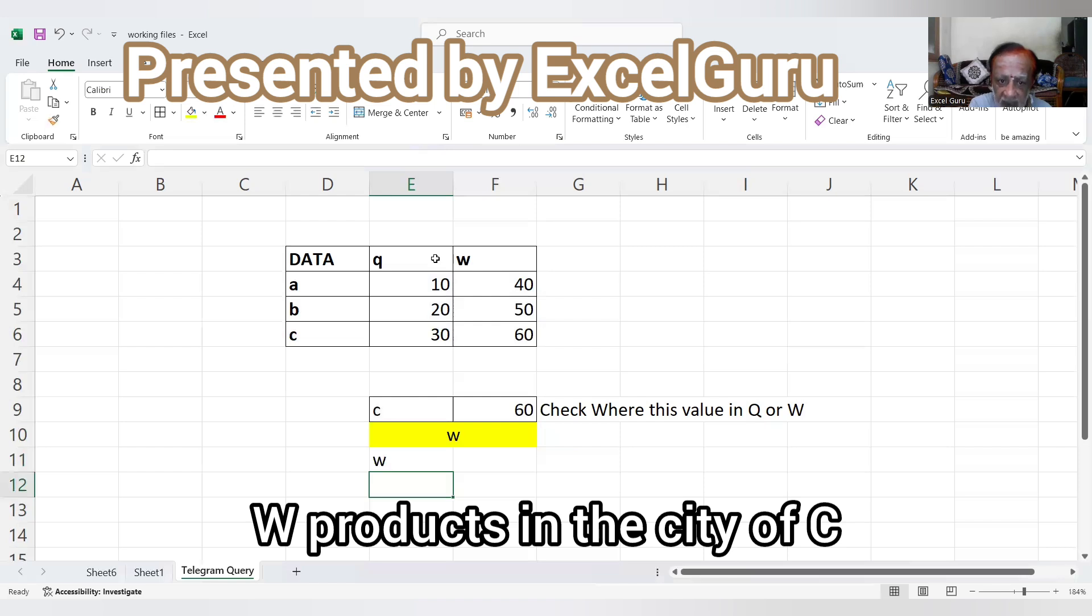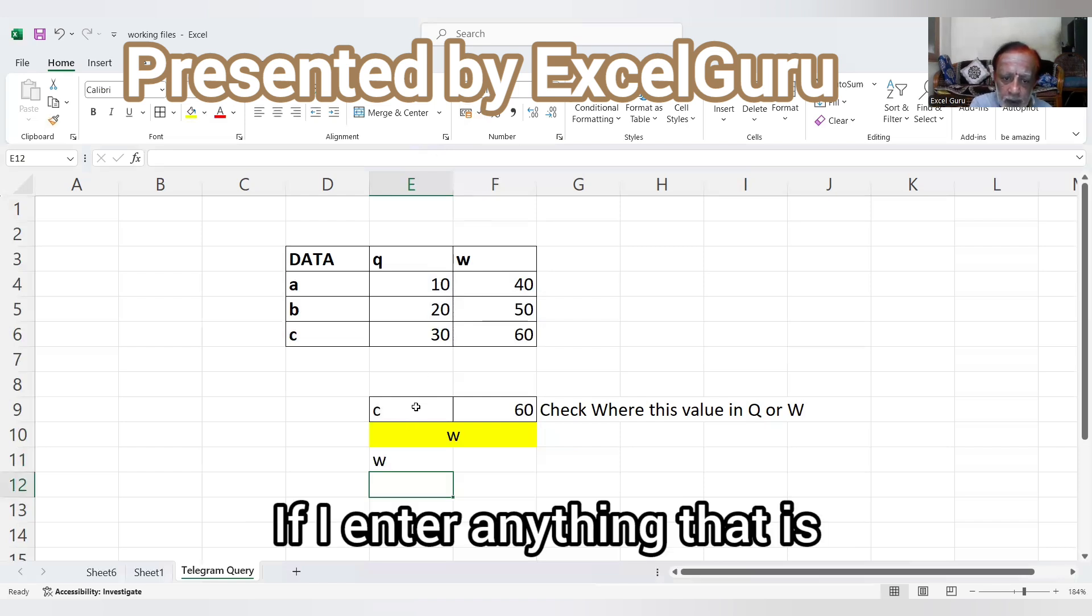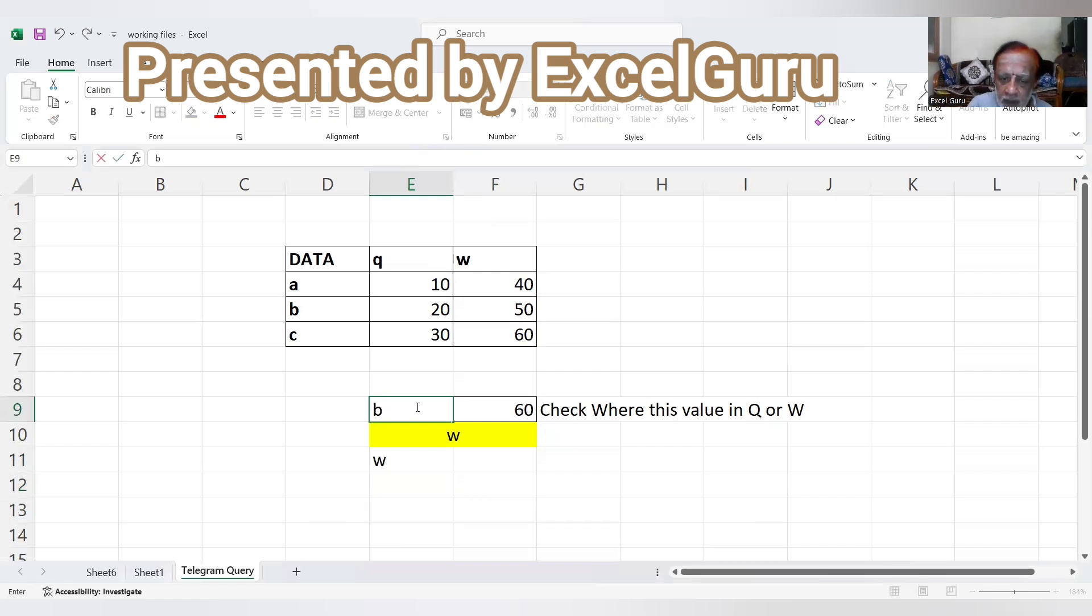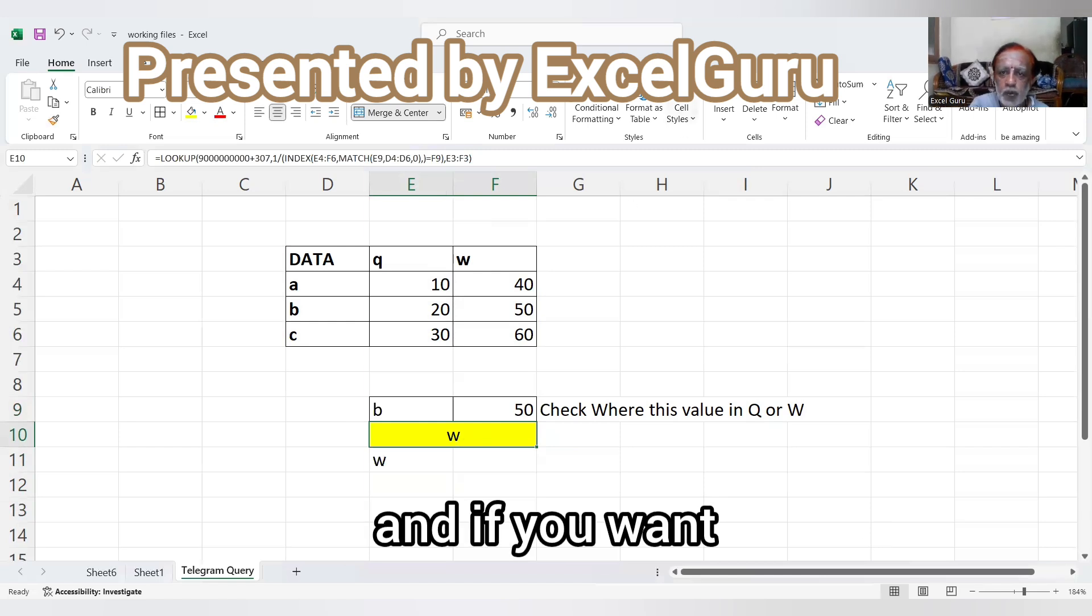Press enter. W, 60 is available in 60 quantity, W products in the city of C. If I enter anything that is B, it will not accept C because in B there is no 60. If I use 50 here, then it will pick up W. Nice. I hope you understood.